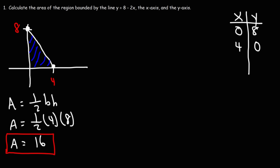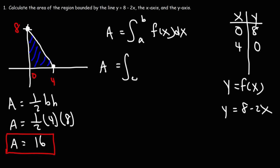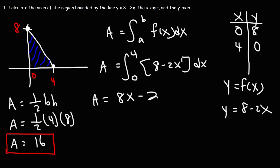But let's use calculus as well. The area between a curve and the x-axis is the integral from a to b of f of x dx. Here y equals 8 minus 2x, so we integrate from 0 to 4: the integral of 8 minus 2x dx. The antiderivative is 8x minus x squared. Plugging in 4 gives 32 minus 16 equals 16, and plugging in 0 gives 0. So we confirm the area is 16.